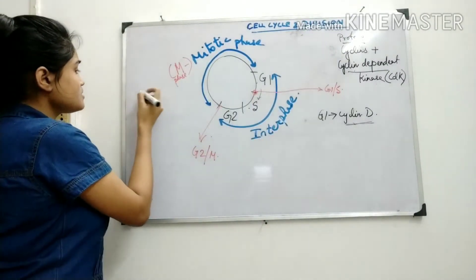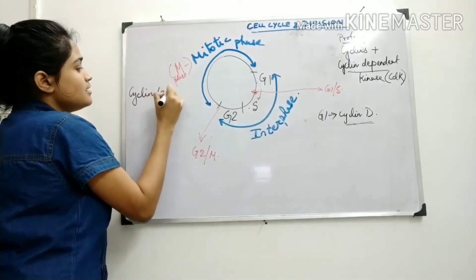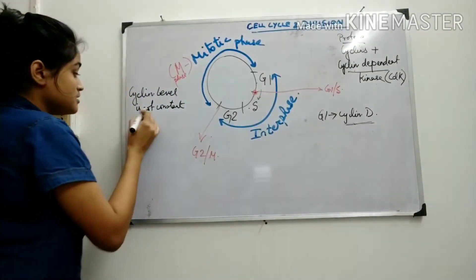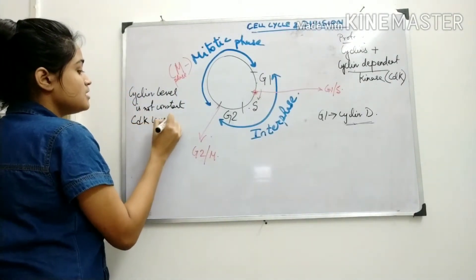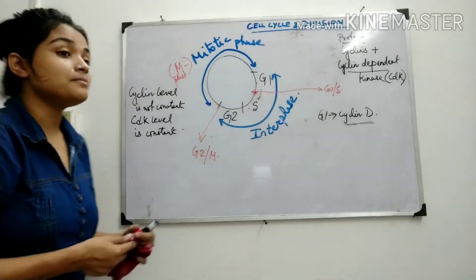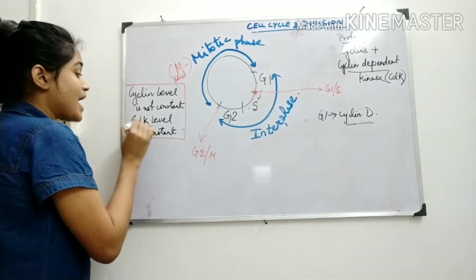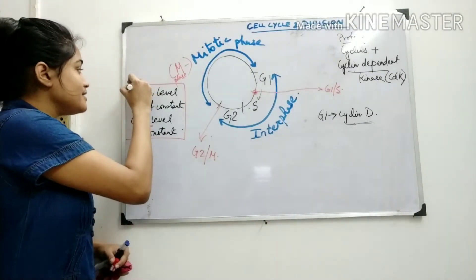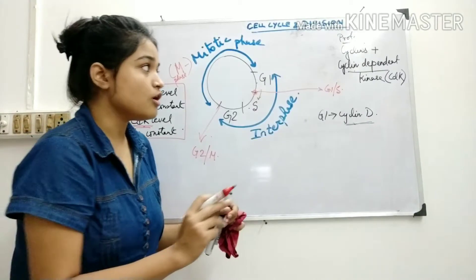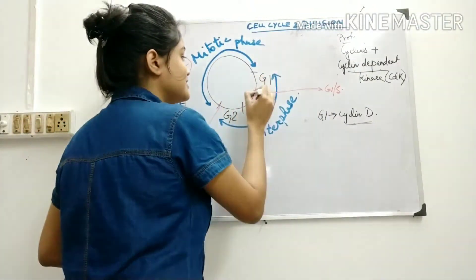Cyclin level is not constant throughout the cell cycle, but CDK level is constant throughout the cell cycle. CDK needs to be activated by the presence of cyclin — the appearance of cyclin activates CDK. So, depending on cyclin level, CDK is activated, and the two form a complex that acts at the checkpoints.